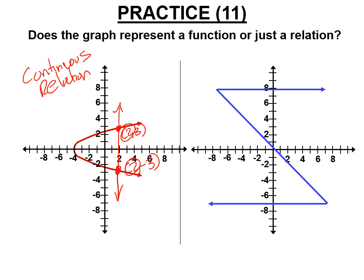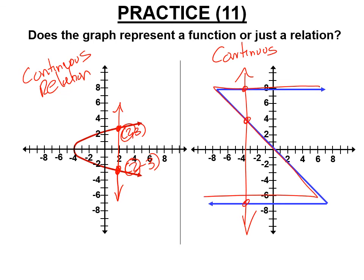Here's a wavy curve. If you draw a vertical line, it hits three points, not just two. So this also fails the vertical line test and is another continuous relation. To summarize: continuous things can be either functions or relations, and discrete things can be functions or relations as well.